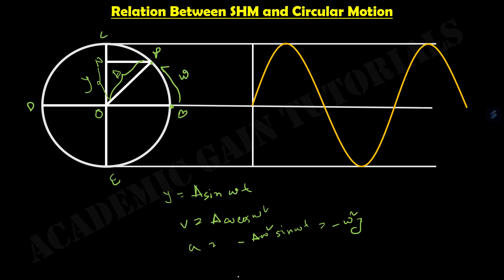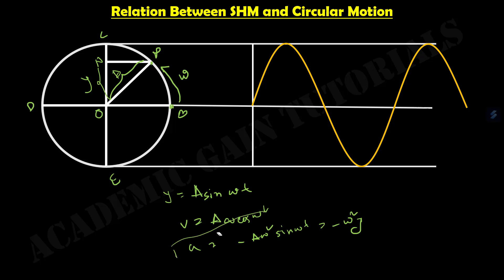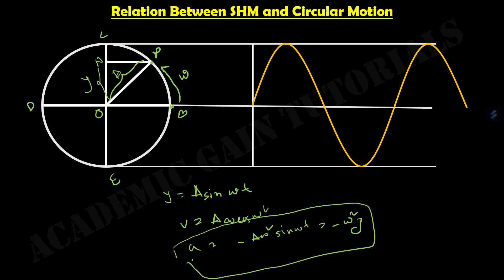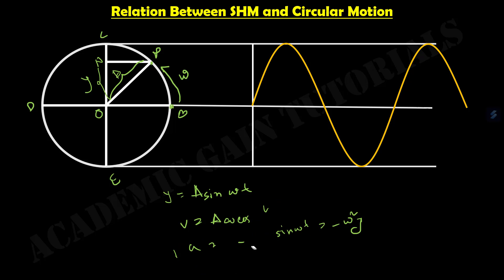We can also write the acceleration as minus omega squared Y. This relation gives us that a body moving in a circular path exhibits simple harmonic motion.